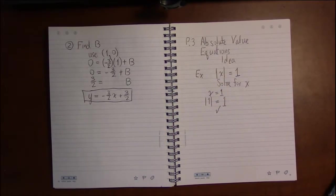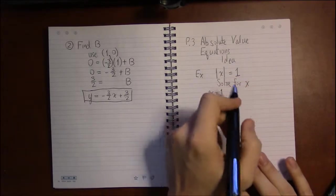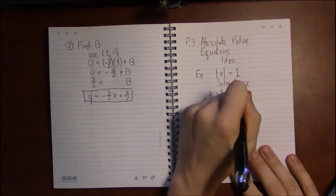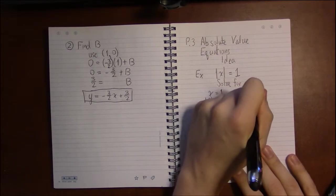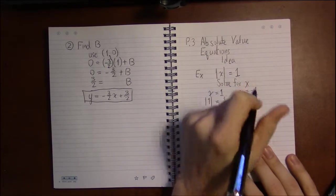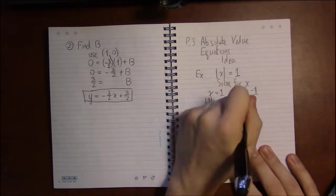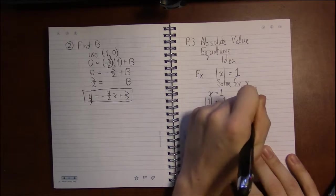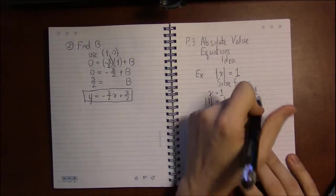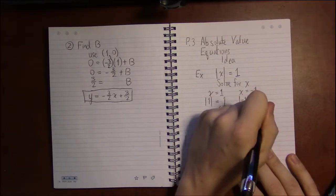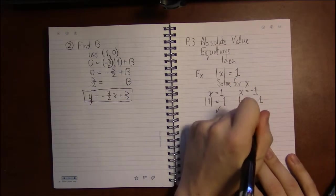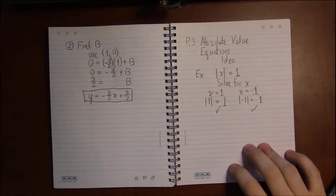But there's actually one more solution to this. If we're making x positive, x could also start out as negative 1. Then taking the absolute value of negative 1 just means make negative 1 positive. That would come out to be our positive 1, so this would work as well.